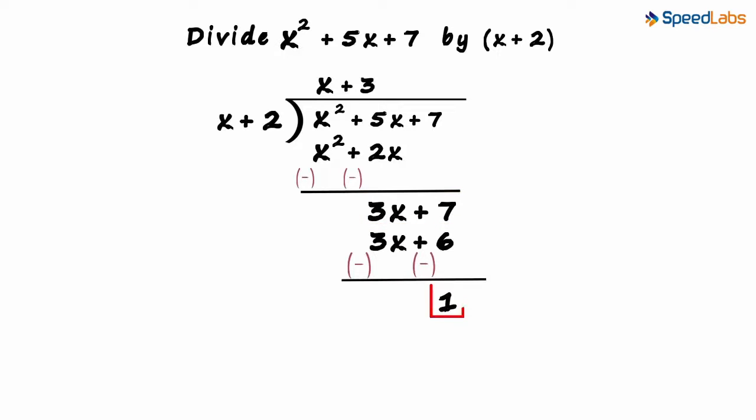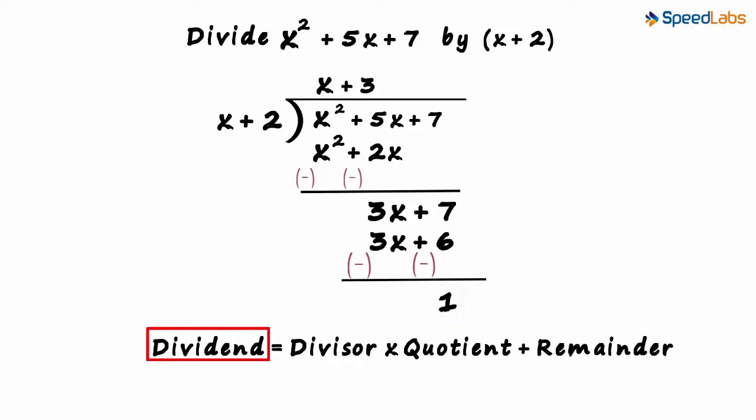As the degree of the remainder is less than the degree of the divisor, we can stop here. Now we write the dividend as divisor multiplied by quotient plus remainder.